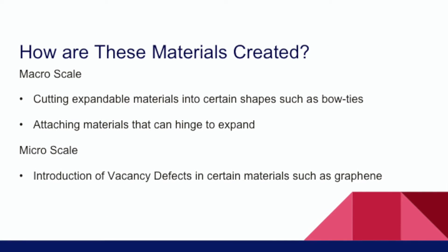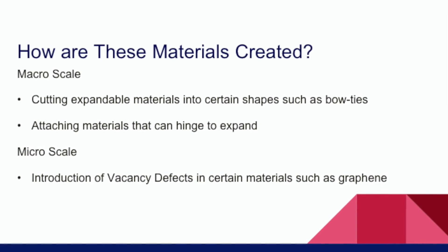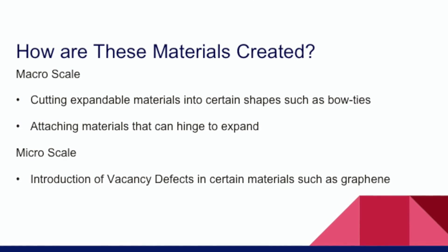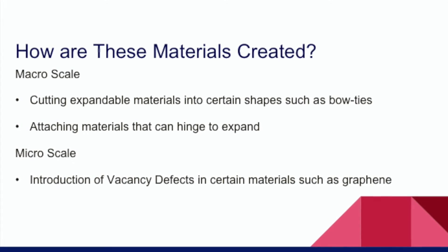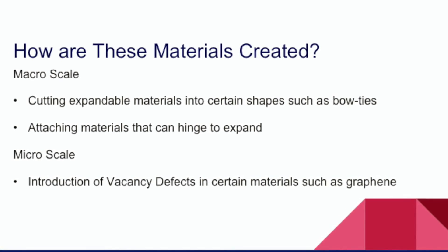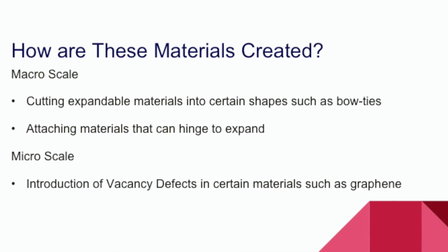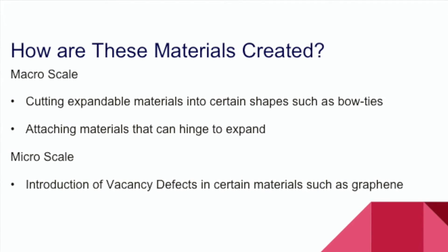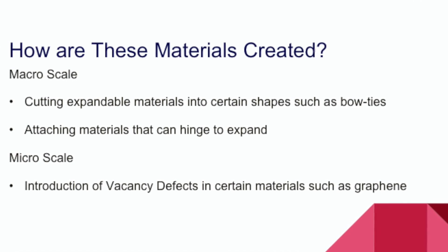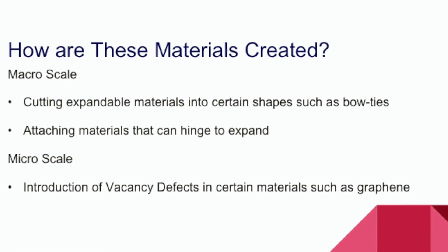Negative Poisson's Ratio materials can be created by cutting material into certain shapes. There are a variety of shapes that can create this effect, such as bow ties or odd triangular patterns. On the micro scale, one can create negative Poisson's Ratio by introducing vacancy defects in certain materials, such as graphene. Note these materials do not show the drastic expansion in the lateral direction, but they still do expand.